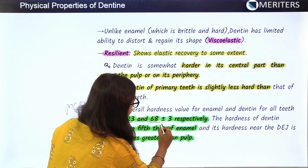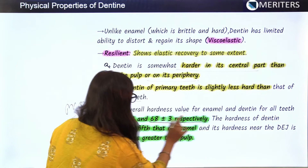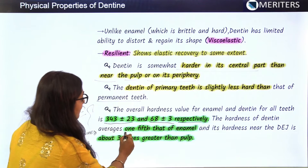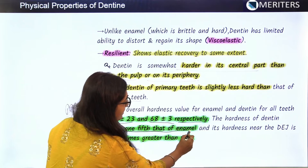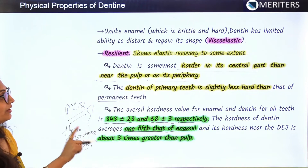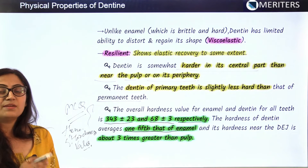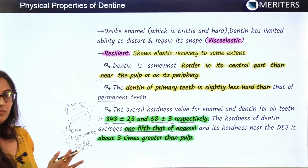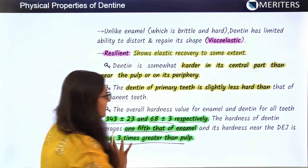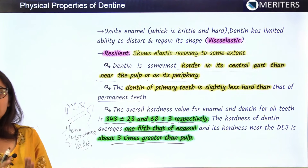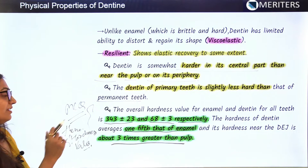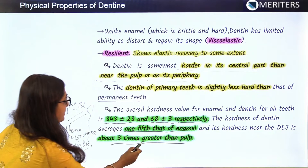The hardness of dentine averages one-fifth that of enamel, and its hardness near the dentino-enamel junction is about three times greater than near the pulp. So dentine is harder near the dentino-enamel junction than near the pulp — three times harder.